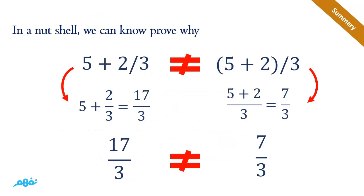In a nutshell, why do we study this lesson? Consider: 5 + 2/3 versus (5 + 2)/3. Both have the same values and the same operators but totally different results. In the first, division takes priority: 2/3 + 5 = 17/3. In the second, brackets come first: 5 + 2 = 7, then divided by 3 = 7/3. If you wonder why this lesson matters, ask yourself: is 17/3 equal to 7/3? Thanks for watching.